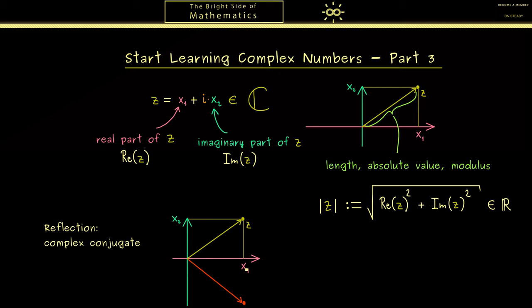This means that we don't change the real part but only the imaginary part. And indeed we just change the sign of the imaginary part. Hence if z is x₁ plus i x₂ the new number here is x₁ minus i x₂.